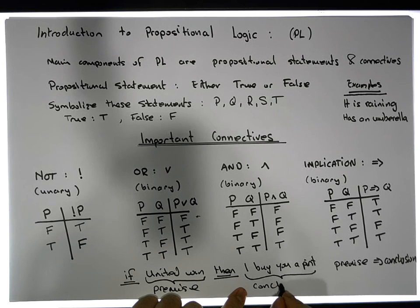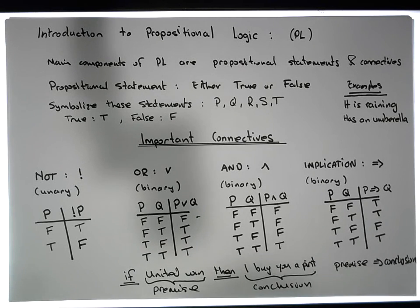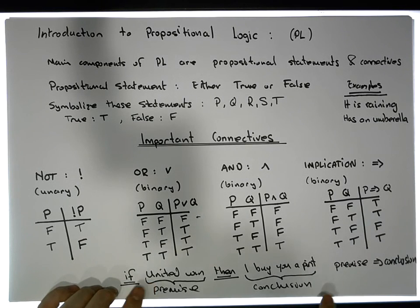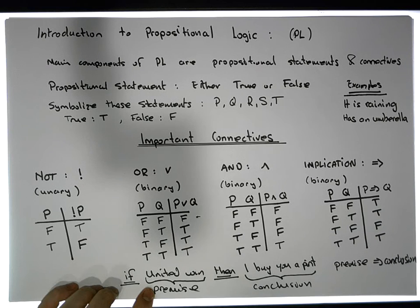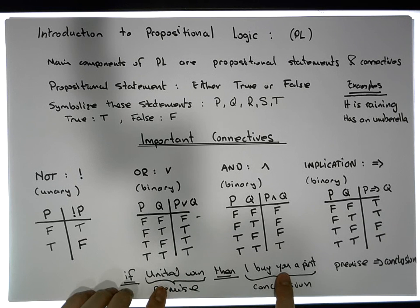Let's use this example. 'If United win, then I'll buy you a pint.' For the true/true case: United did win and I did buy you a pint — I haven't told any lies, so the output is true. For the true/false case: United did win but I didn't buy you a pint. You said you would — that's a lie. So the output is false.